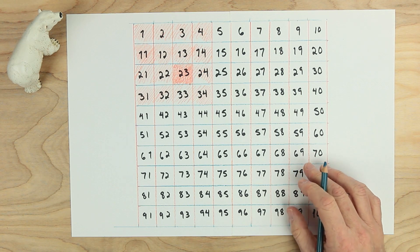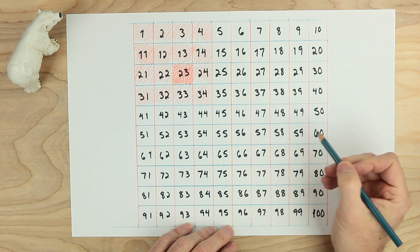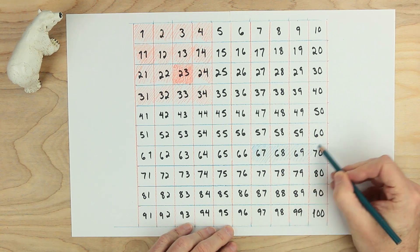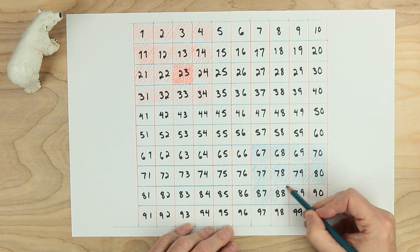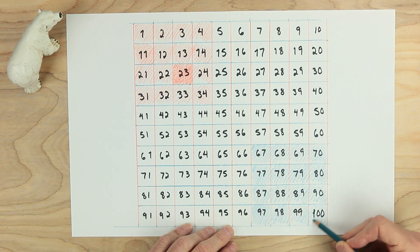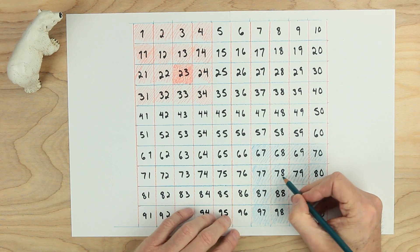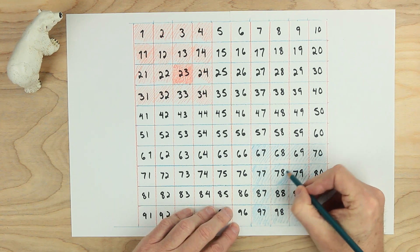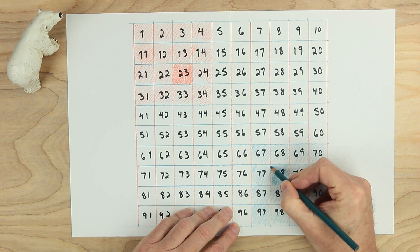And I want to do the same thing down here with the blue pencil. Starting at the 67. On the blue side, I want to color in the 78 really, really well. You might make the whole blue area or red area darker.